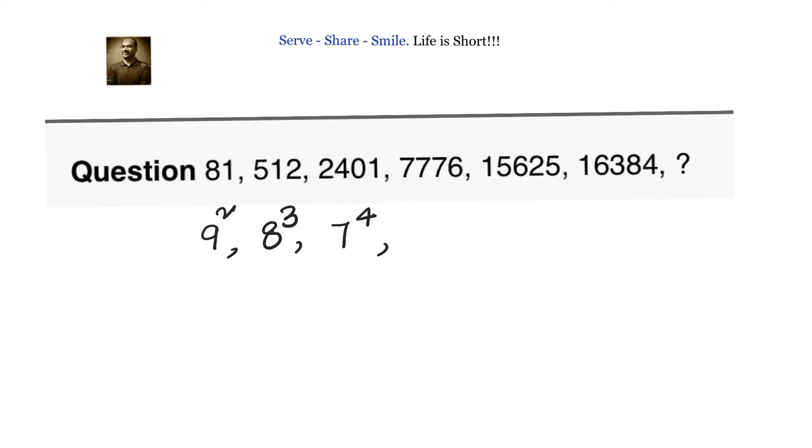So what's happening now? The numbers are going on reducing and the powers are going on increasing. So this guy I think should be 6 power 5, then I'm sure that this is 5 power 6, and this is 4 power 7.